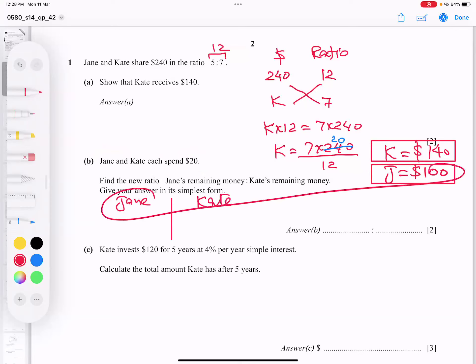Jane's amount is 100. So from 100, subtract 20. From Kate, 140, subtract 20. So we got 80 here and we got 120. Now we need the ratio between them. So Jane remaining money is this. Kate remaining money is this.